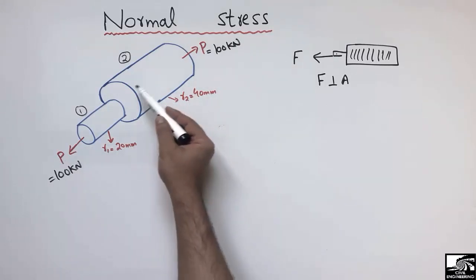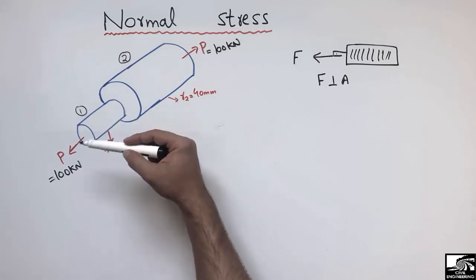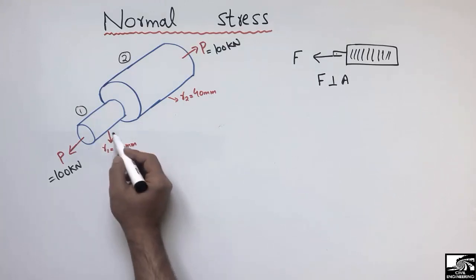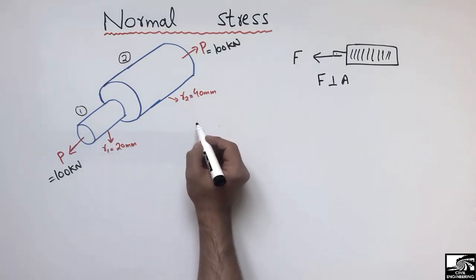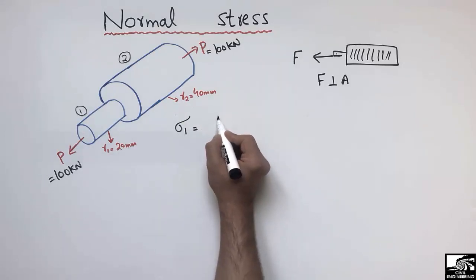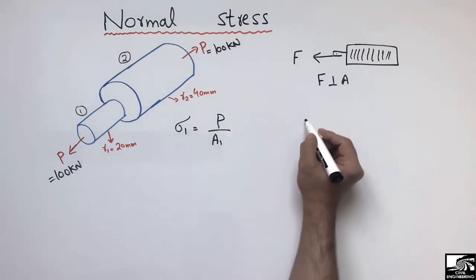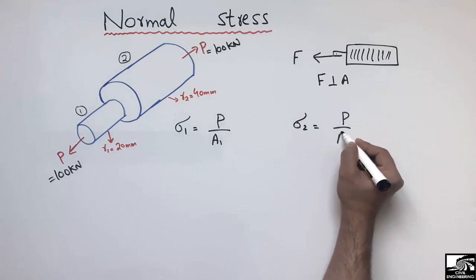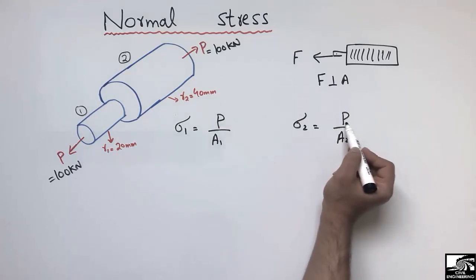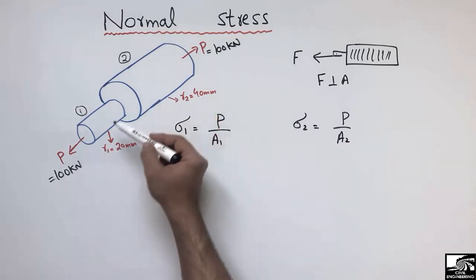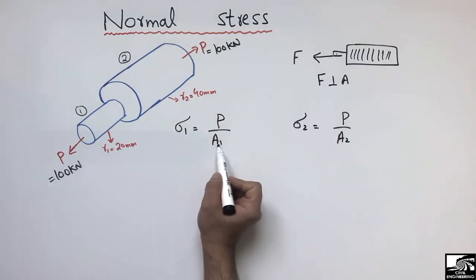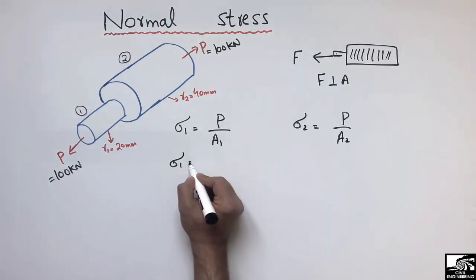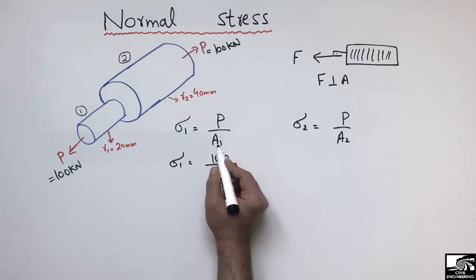Due to this tension force, stresses will be created and the shape will elongate along its length. To find the stresses: stress in the first cross-section, σ1 = P/A1, and stress in the second cross-section, σ2 = P/A2. The same force P acts on both, but with different cross-sectional areas A1 and A2.